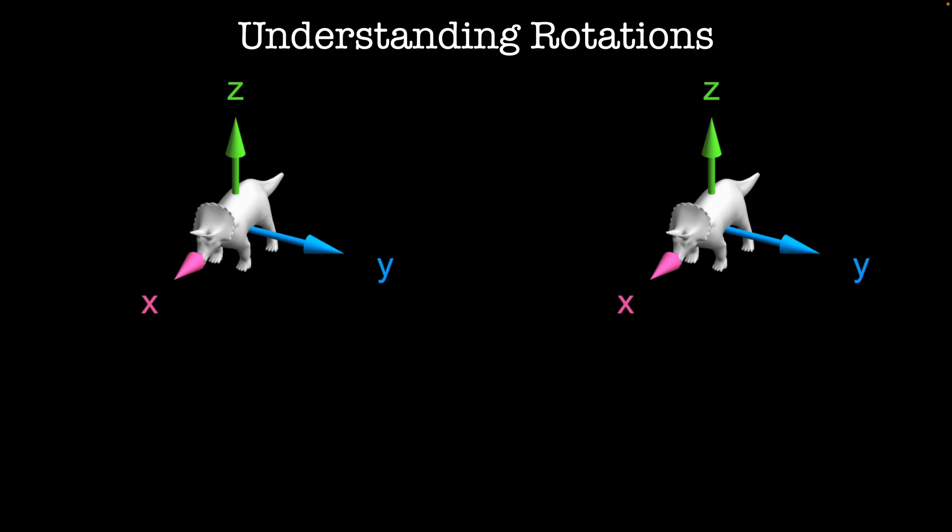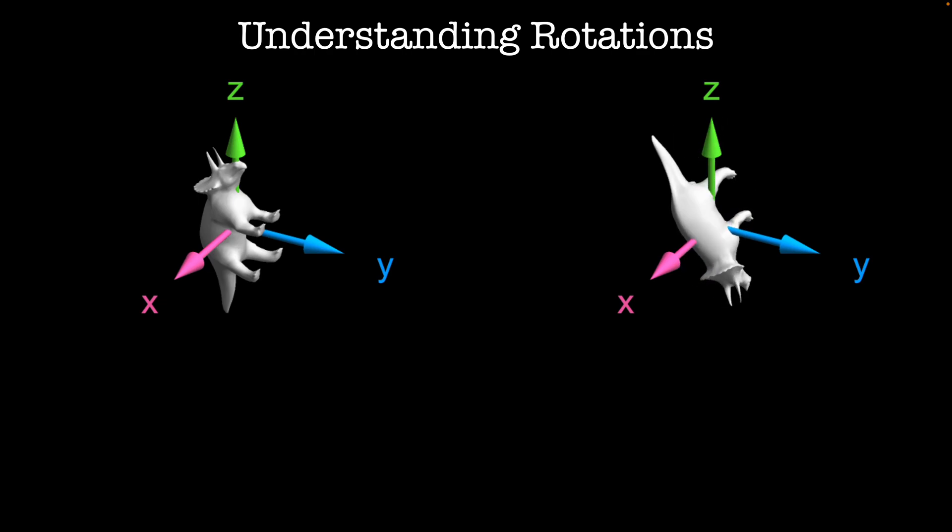The first thing that we're often taught about rotations is that rotations don't commute. On the right, I'm going to rotate the triceratops by 90 degrees about the x-axis and then 90 degrees about the y-axis. On the left, I'll first rotate it about the y-axis and then about the x-axis. At the end, the two dinosaurs are definitely not oriented in the same way.